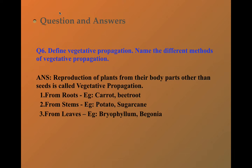Sixth question, define vegetative propagation. Name the different methods of vegetative propagation. The answer is reproduction of plants from their body parts other than seed is called vegetative propagation. There are three types of vegetative propagation.